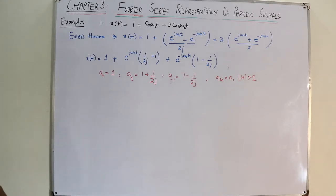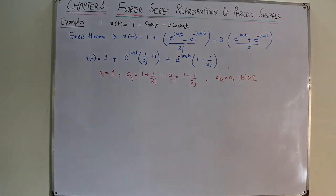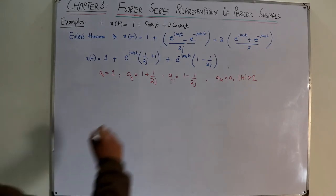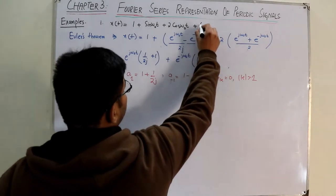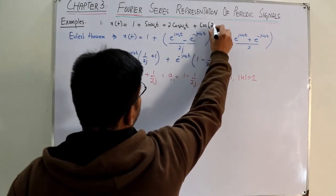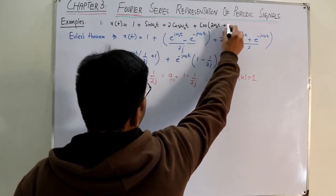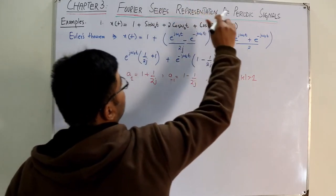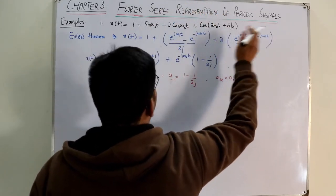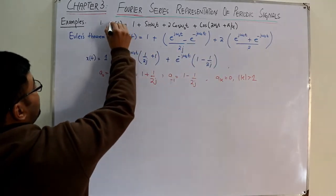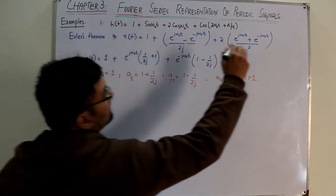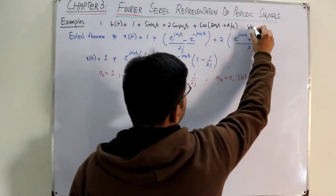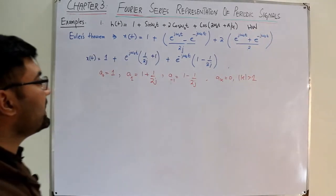I missed a term: there's also a plus cos(2ω₀t + π/4) in the signal. Finding the Fourier coefficients for that added term is now your homework.